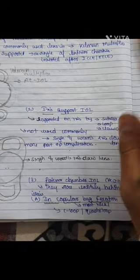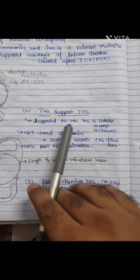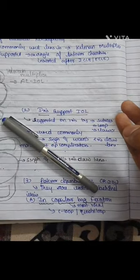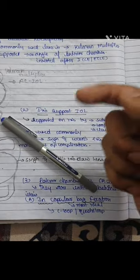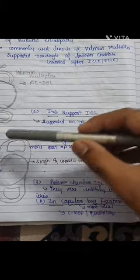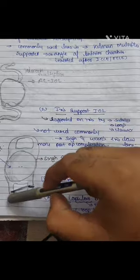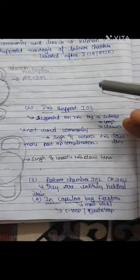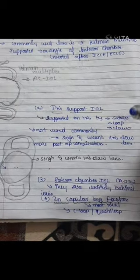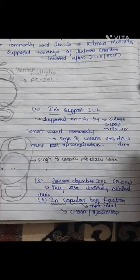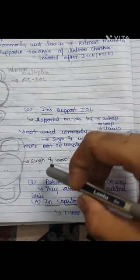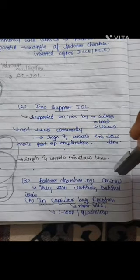Second is iris-supported lenses. These intraocular lenses are supported on the iris by three methods: you can either suture them there, loop over there, or use certain claws fitted in the iris. These are not used commonly. The name of this lens is the Worst iris claw lens, and post-operative complications are more with this type.